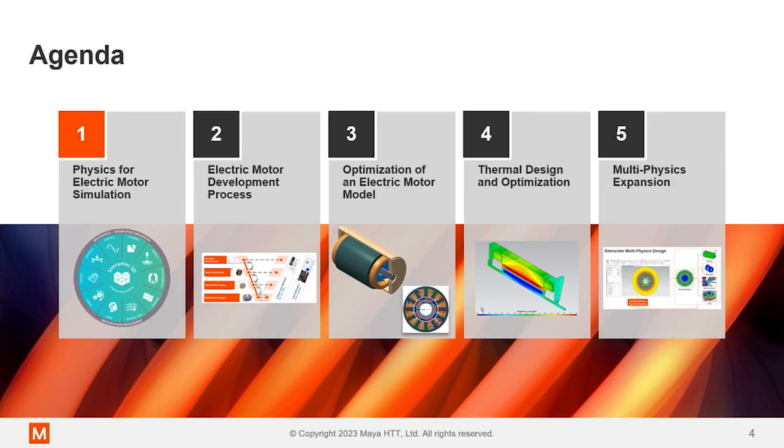As for the actual presentation today, we're going to start by introducing some of the physics domains that you might be interested in when looking at motor simulation and pick out the ones we'll be looking at today. We'll go over the electric motor development process, the stages you might go through, and I'll point out where we're really going to be focusing today. We'll go through the optimization of an electric motor model, automated optimization using the Siemens tools. We'll take a look at how we did some thermal design. Unfortunately, we didn't get as far as optimization on that particular step for this demo. And we'll touch on multi-physics expansion.